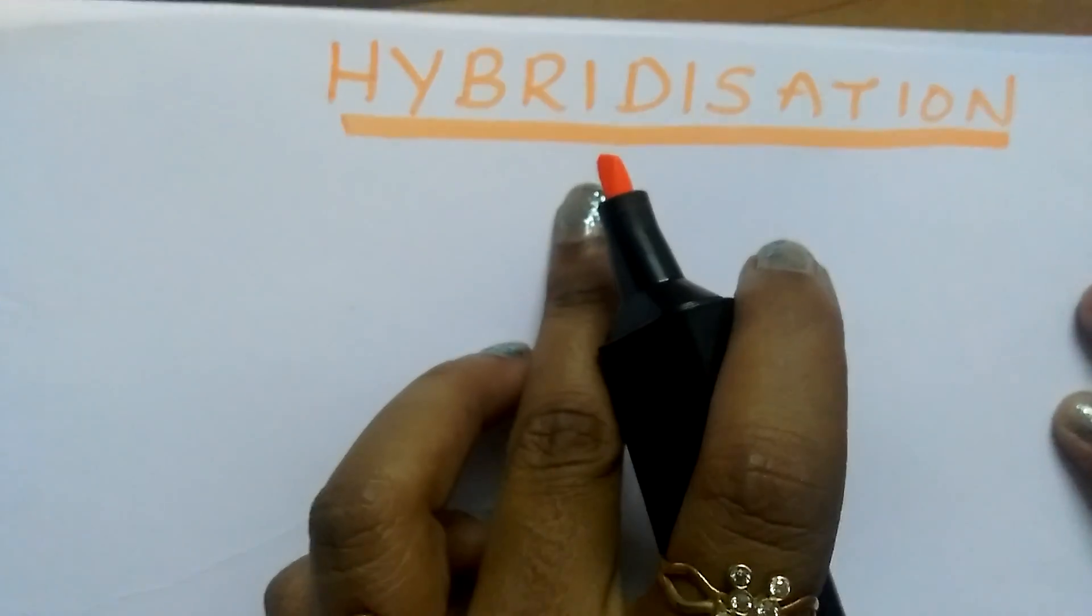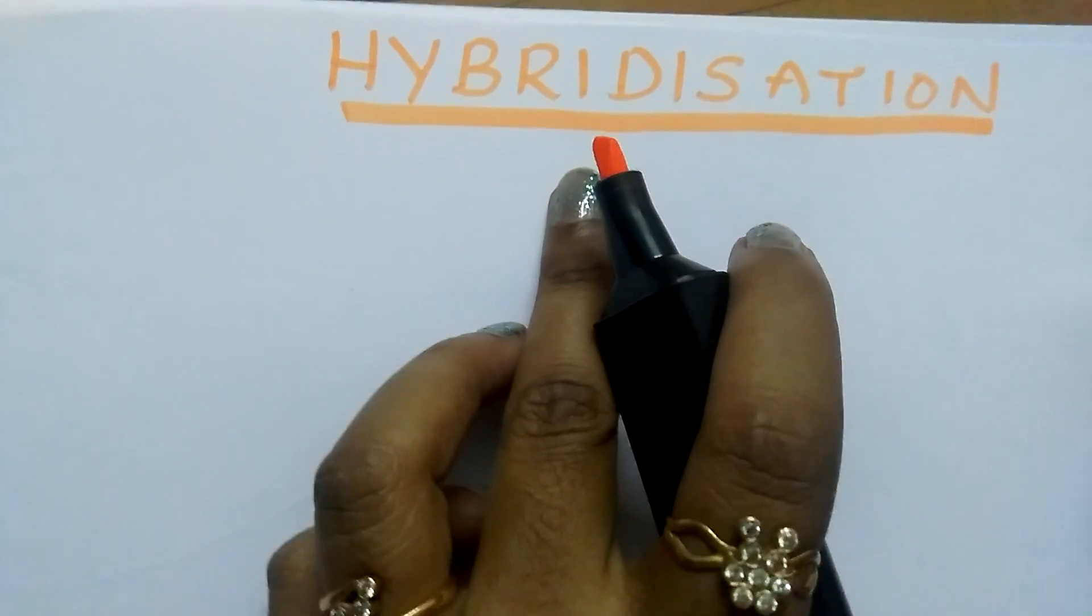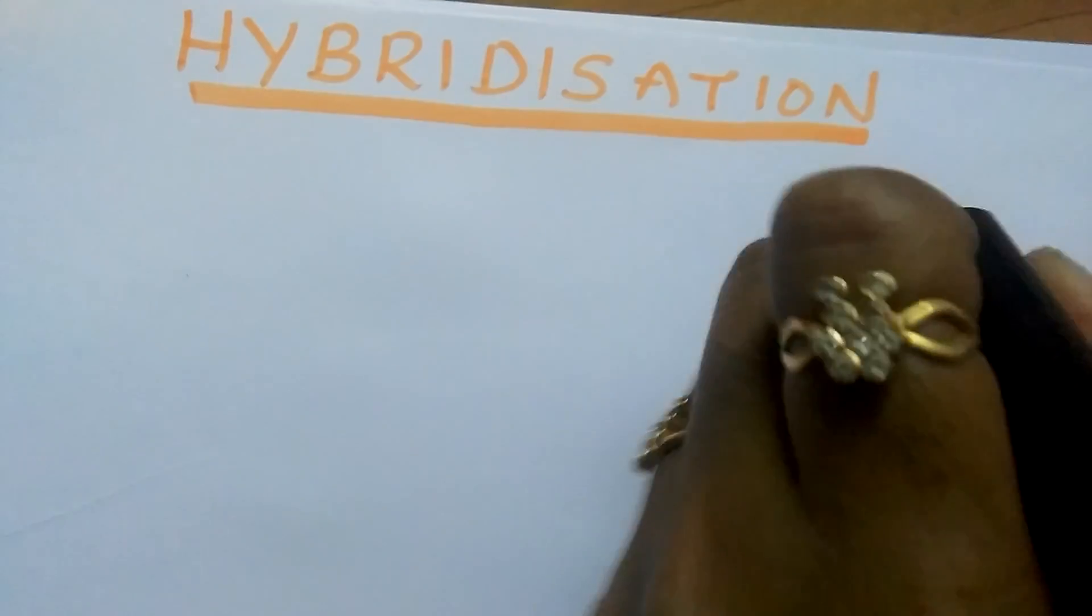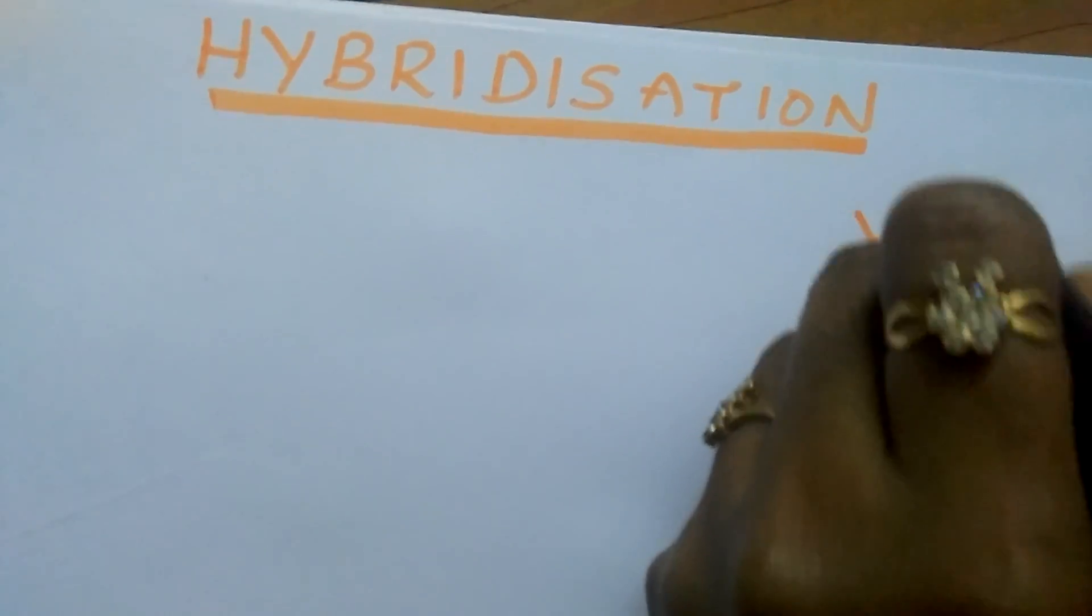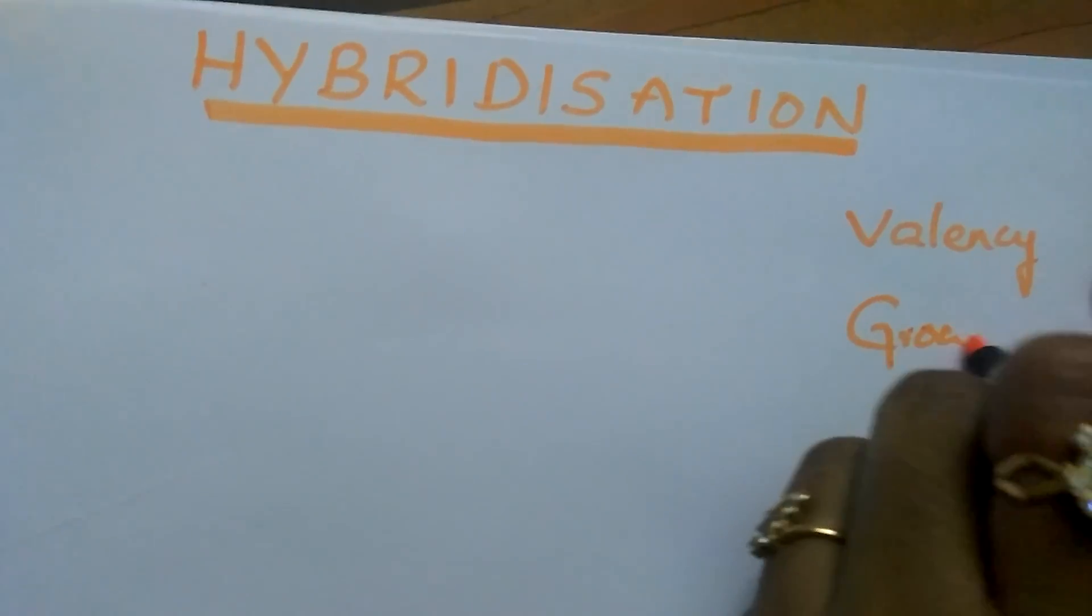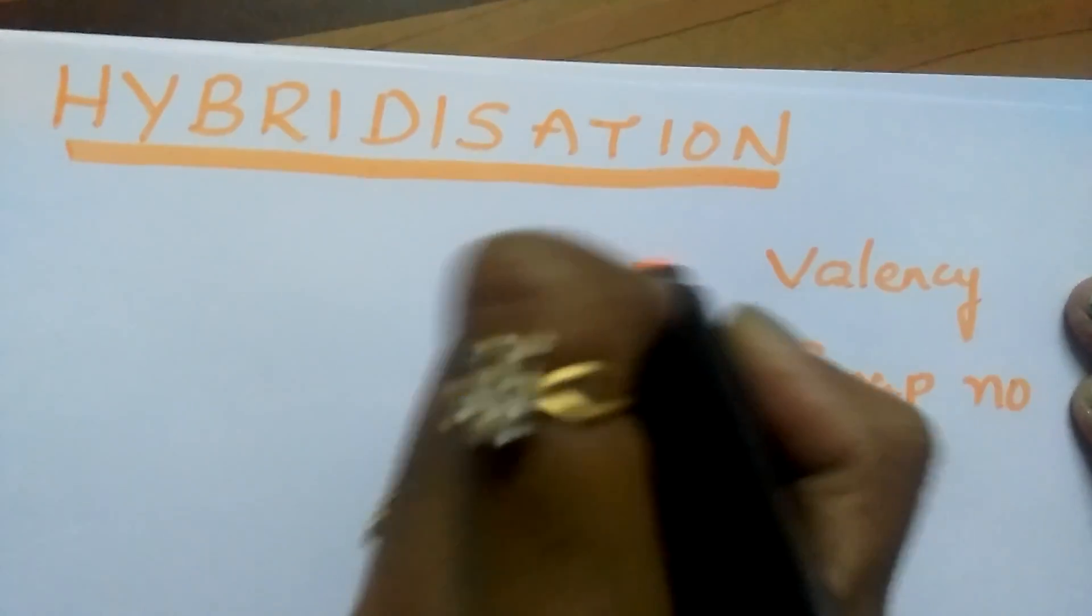For finding the hybridization, you should have an idea regarding two things: one is valency and the other is group number.